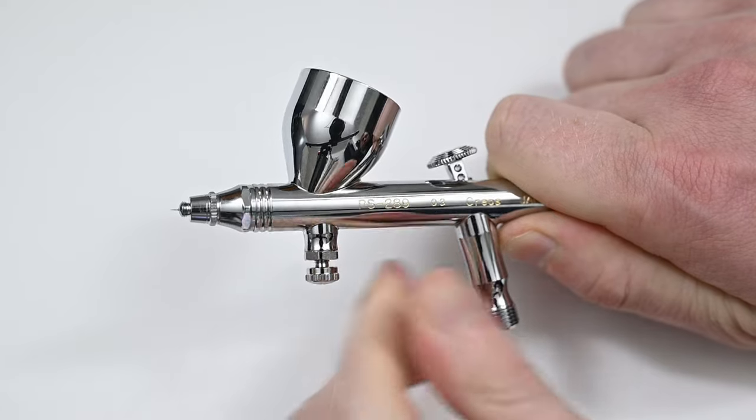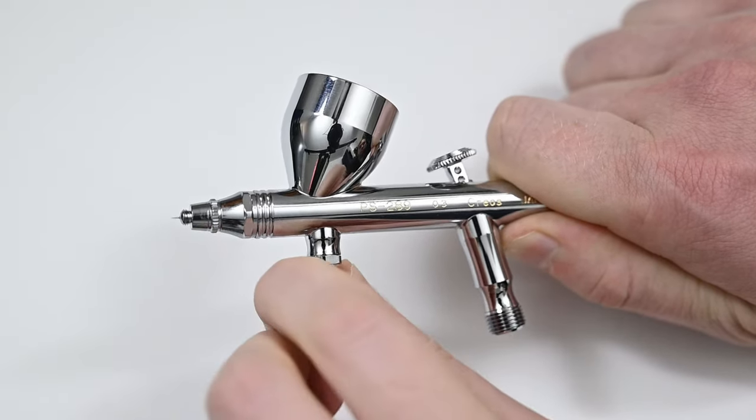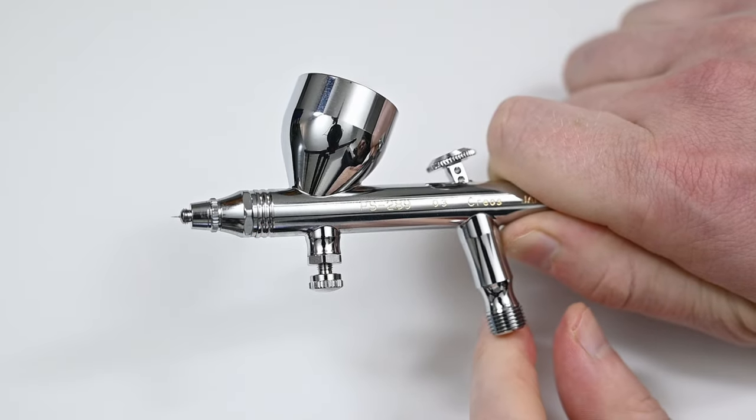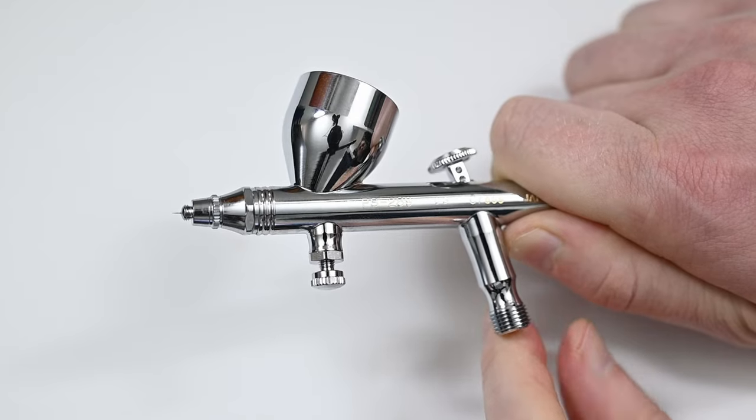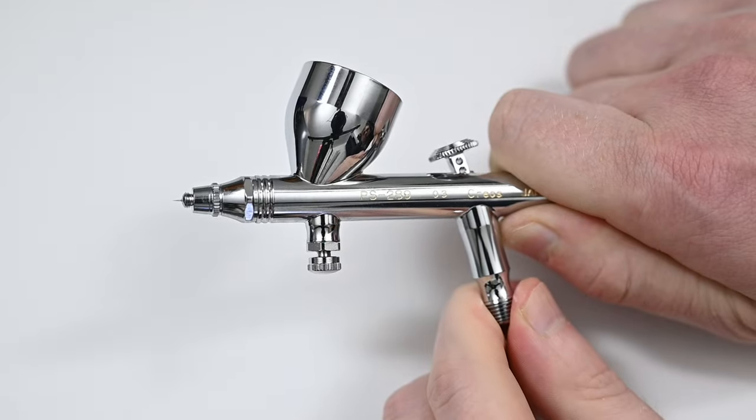On the front of the airbrush, you'll see this small screw, which is called the air adjustment screw. What this does is control the amount of airflow through the front of the airbrush. If you loosen this screw, you get full airflow to whatever your PSI is set at, and if you tighten this down, you limit it, giving yourself a lower airspeed.